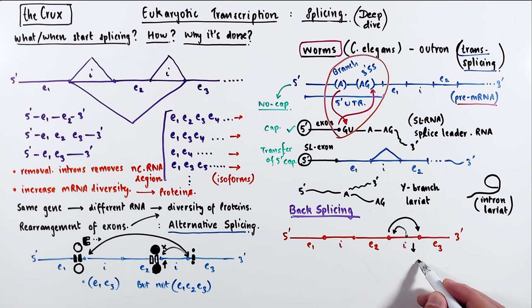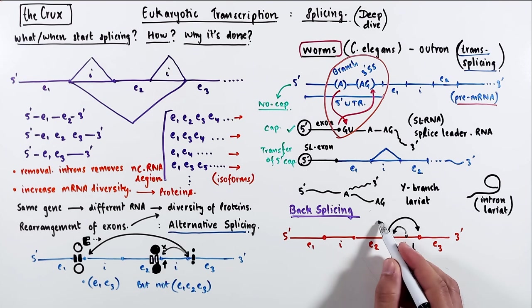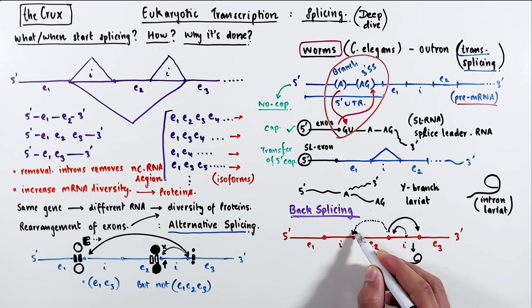The step 2 goes in the forward direction, and as a result, you get the classic intron lariat. Now in some cases, the 3' end of the exon will go in the backward direction and attack its own 5' end,